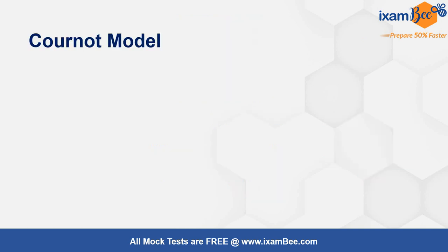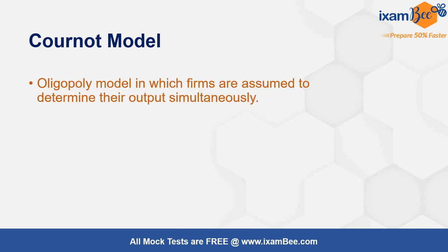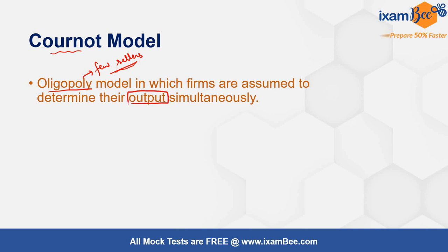What exactly is a Cournot model? A Cournot model is a form of an oligopoly model. In the oligopoly model there are few sellers in the market — it's a kind of market structure where few sellers come together and they could either determine output or prices in order to maximize profits. But in the Cournot model, the few sellers determine the output simultaneously.